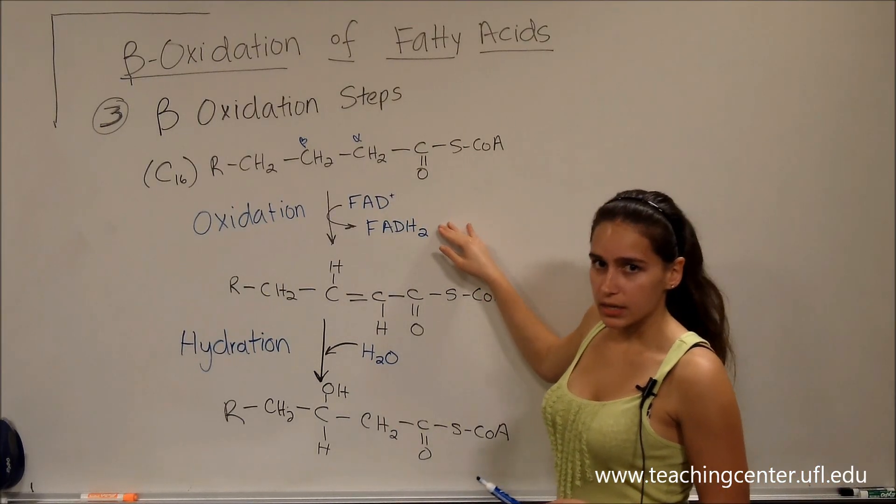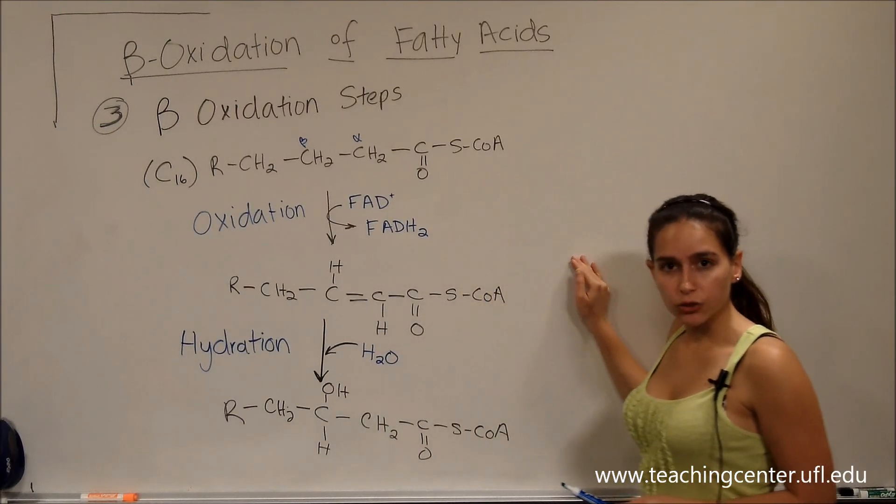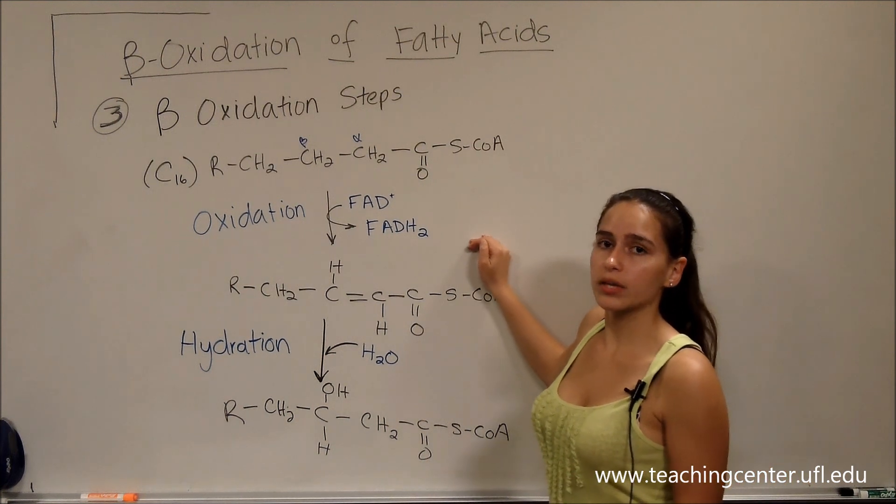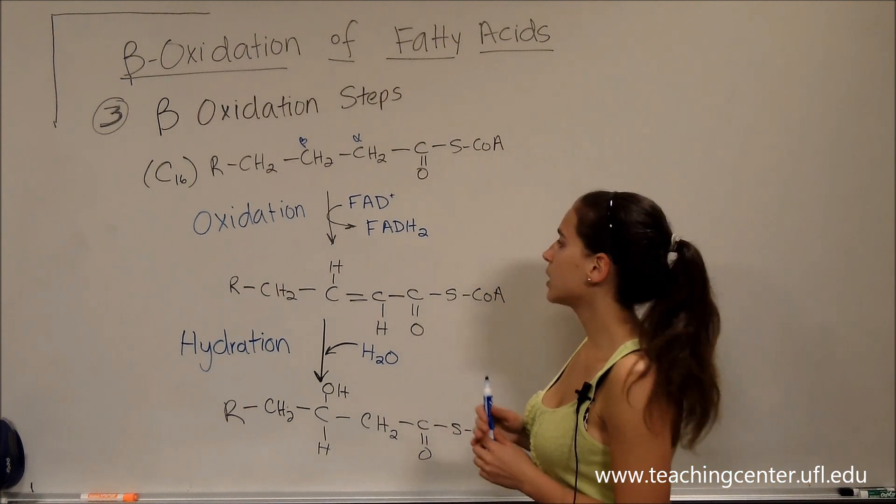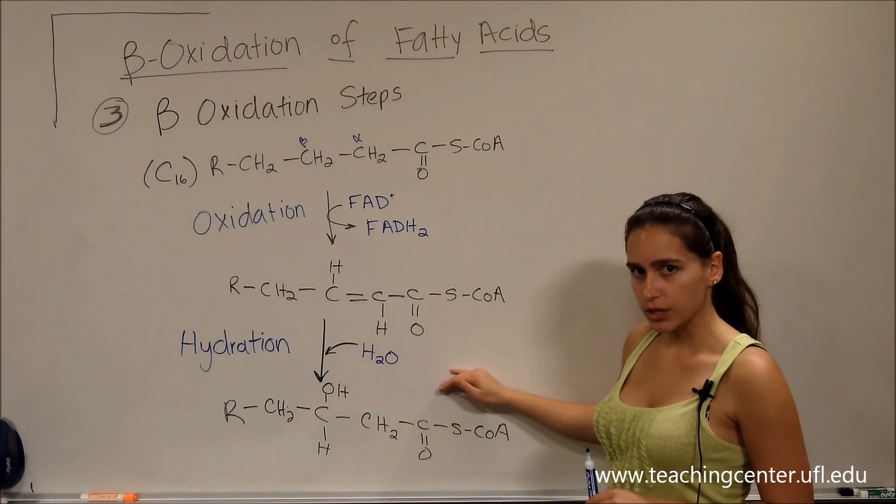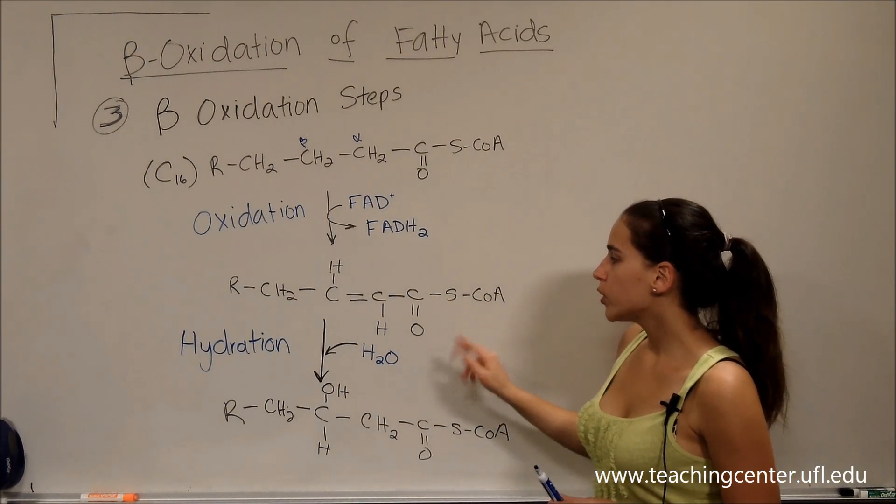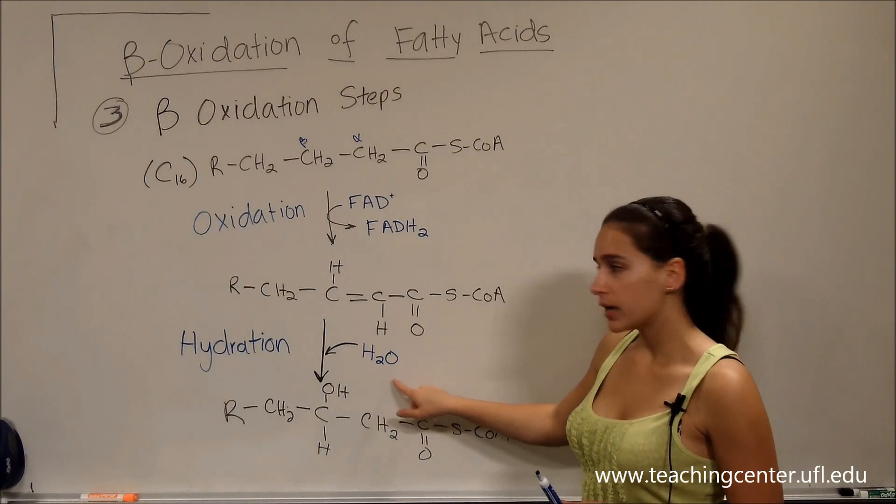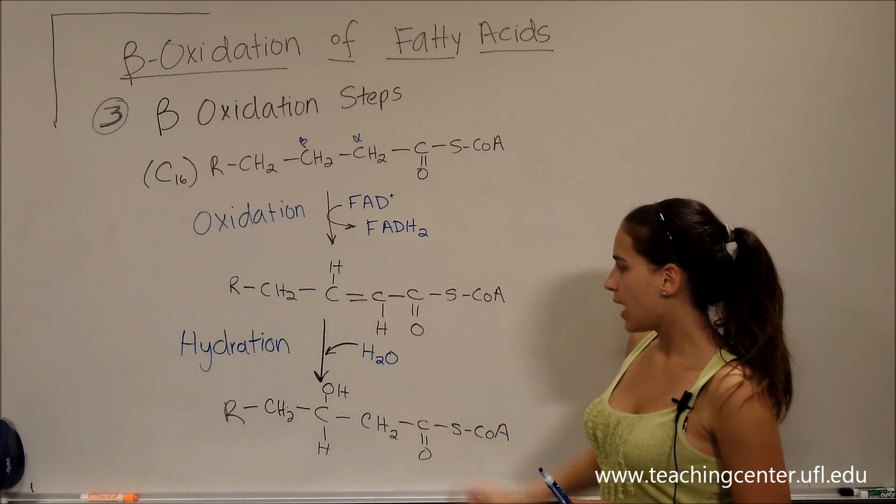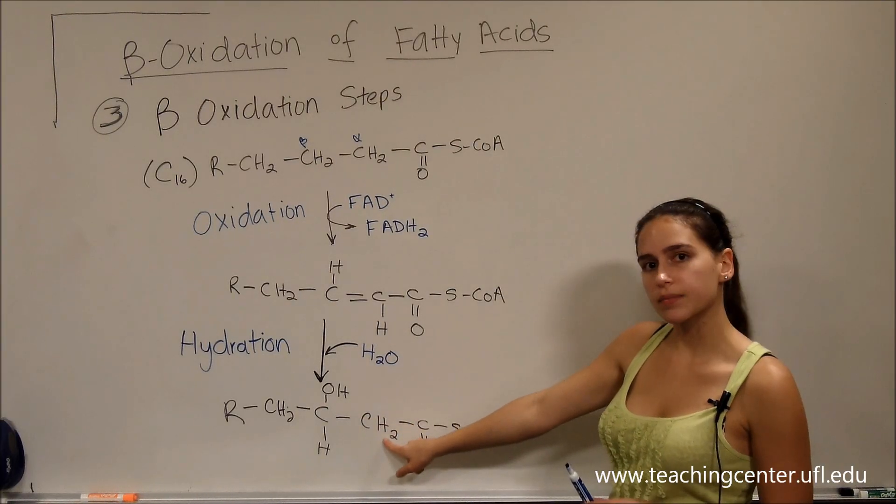We know that FADH2 is going to go into the electron transport chain, and yield two ATP. We're going to talk about the energy yield later. Then our second step is going to be a hydration. We're going to add an H and an OH across that double bond, at the alpha and beta carbons. And here we can see the OH, and the H is right here.